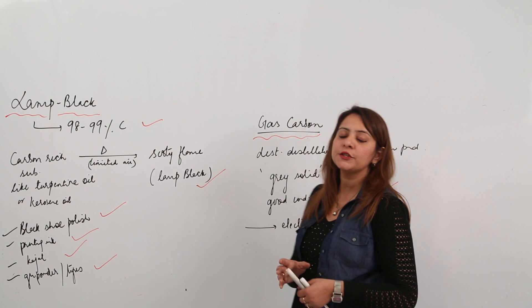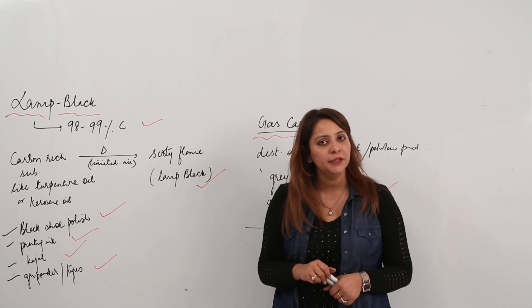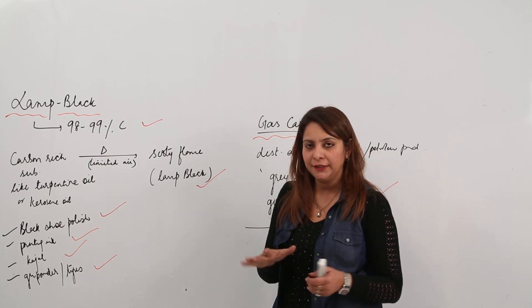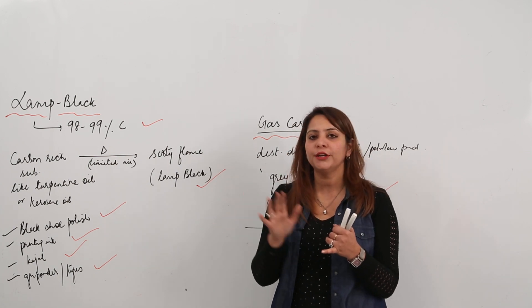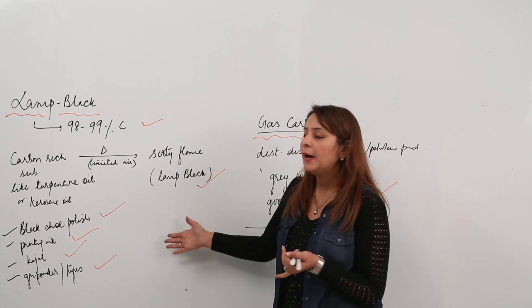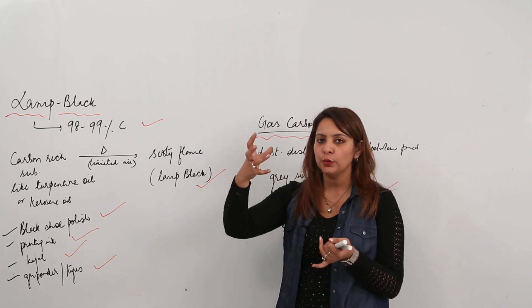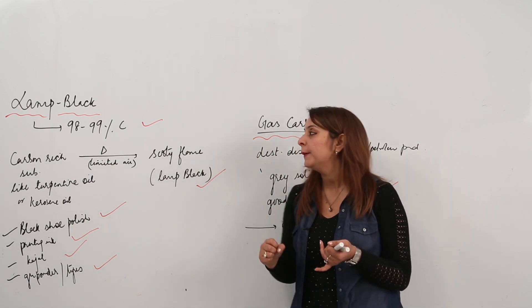So these are all the four amorphous forms of carbon: coal, charcoal (the wood charcoal, bone charcoal, and sugar charcoal), lamp black, which is just the black sooty flame collected in the form of powder.